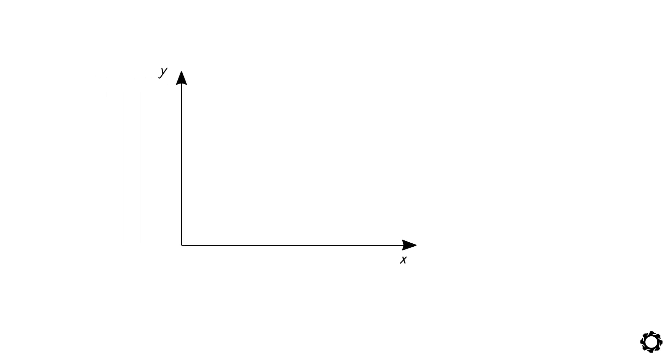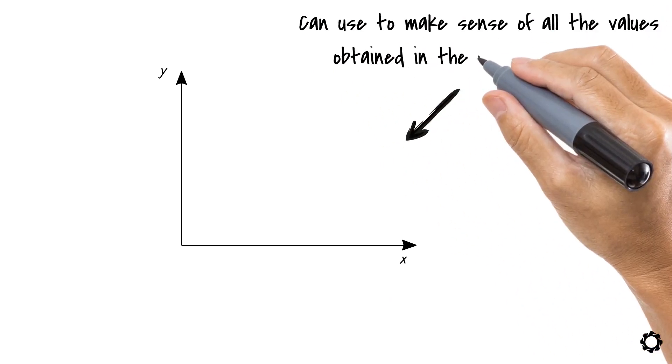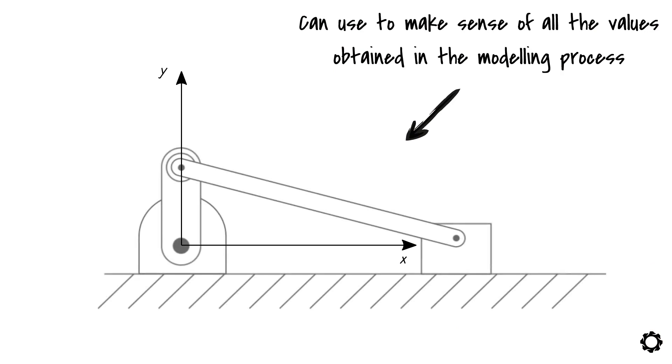Let's bring in an inertial coordinate system. Remember, we need to have a frame of reference which we can use to make sense of all the values obtained in the modeling process. This inertial or global frame of reference is placed at the lower left revolute joint of the crankshaft mechanism for our convenience.